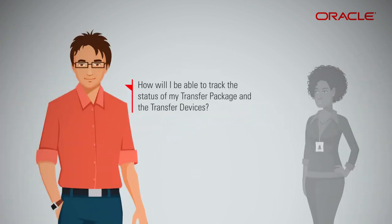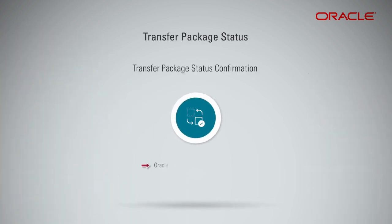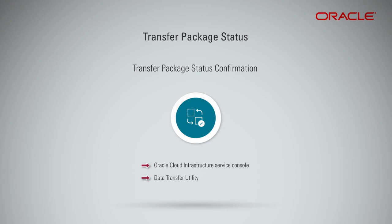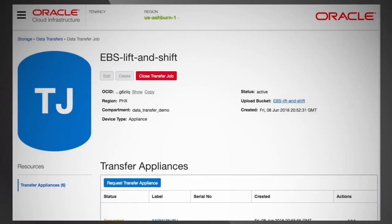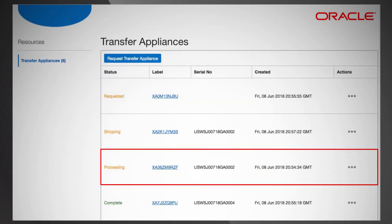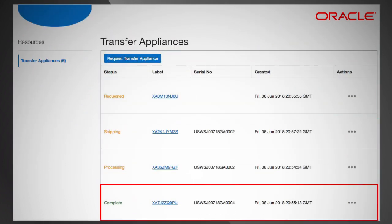How will I be able to track the status of my transfer package and the transfer devices? You can use the OCI console or the Data Transfer Utility to check the status of a transfer package. These are the status indicators that you will see: Requested, Shipping, Processing, Complete.